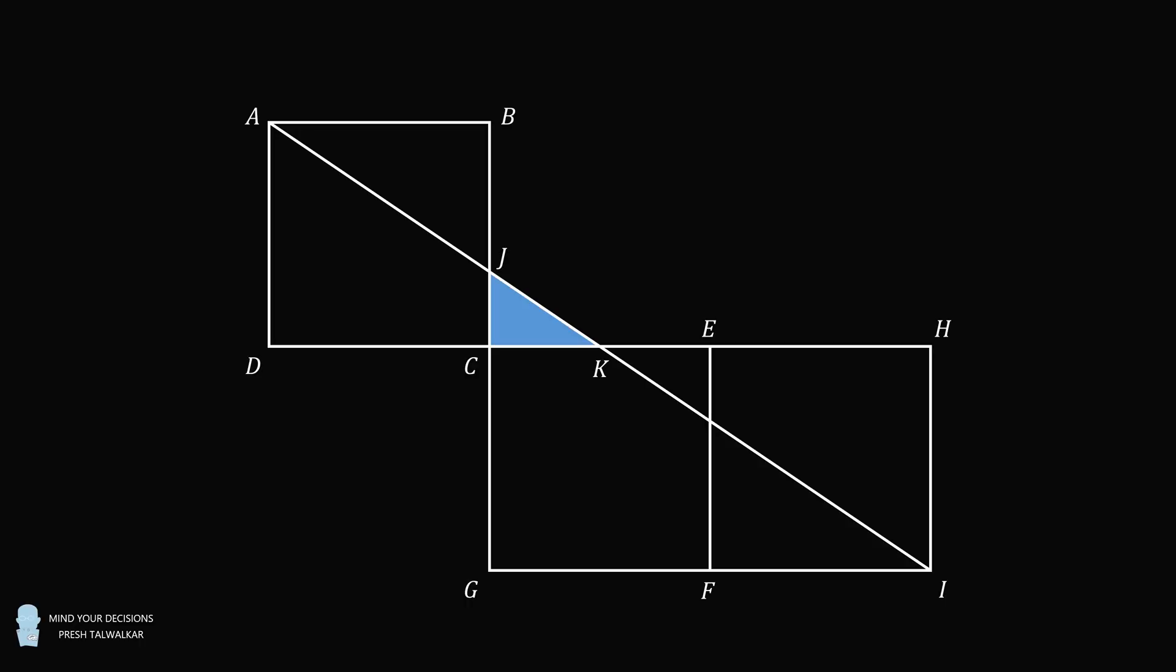Suppose the area of triangle CJK is exactly equal to one square meter. The question is what is the area of one of these three identical squares?